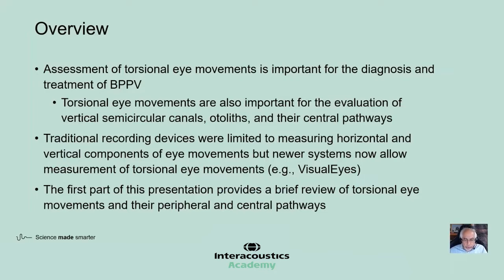Establishing the direction of torsional eye movements is important in identifying the involved canals in BPPV. In general, torsional eye movements can also help with the evaluation of the vertical semicircular canals, the otoliths, and their central connections. Until recently, most VNG systems were limited to measuring just the horizontal and vertical components of eye movements, but the new version of Visual Eyes is now capable of measuring and analyzing torsional eye movements. I will start with a review of torsional eye movements and their peripheral and central connections. Dr. Whitney and Dr. Petrak will describe the practical application of measuring torsional eye movements and head trajectories in BPPV patients.